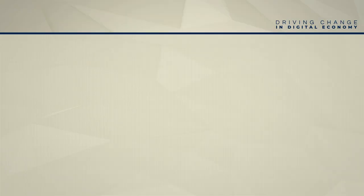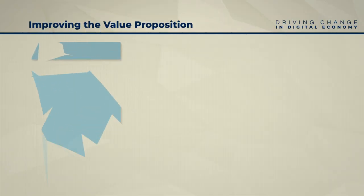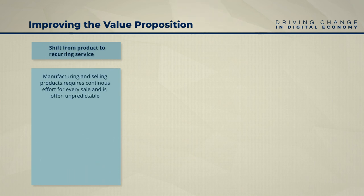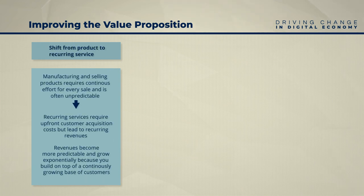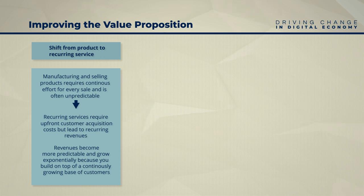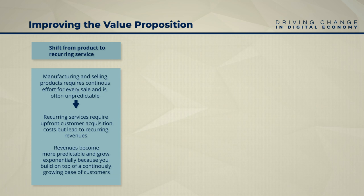There are three ways of improving the value proposition. First, from product to recurring service: this is the shift from manufacturing and/or buying and selling products toward providing a recurring service. Selling products on a transactional basis requires continuous effort for every sale and is often unpredictable. Recurring services require upfront customer acquisition costs that lead to recurring revenues, which become more predictable and grow exponentially as you build on a continuously growing base of customers.